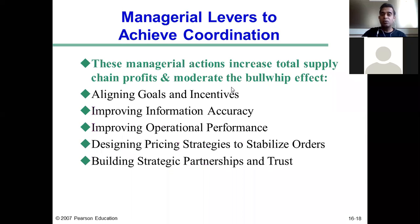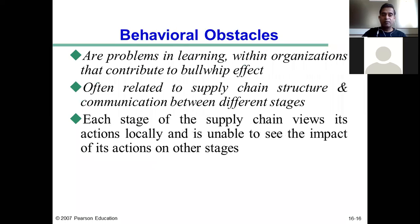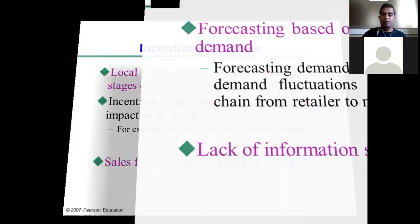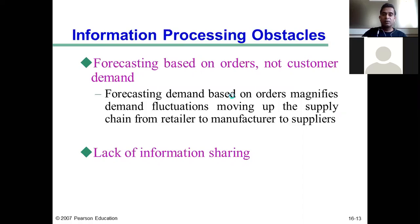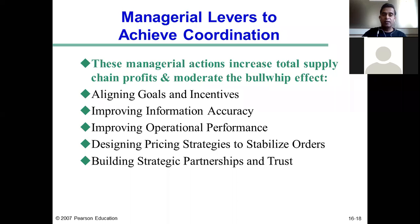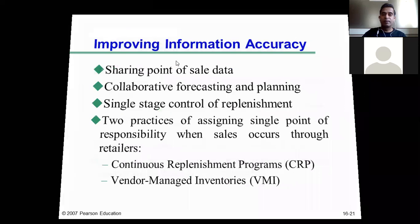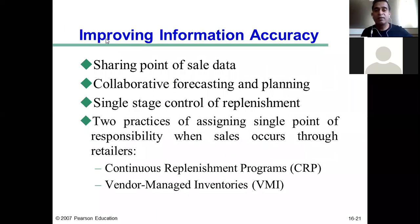Now we move on to the second managerial lever: improving information accuracy. This managerial lever helps the company overcome information processing obstacles. Let us see how a company tries to improve information accuracy in a supply chain, thereby enabling coordination. The second managerial lever is improving information accuracy.